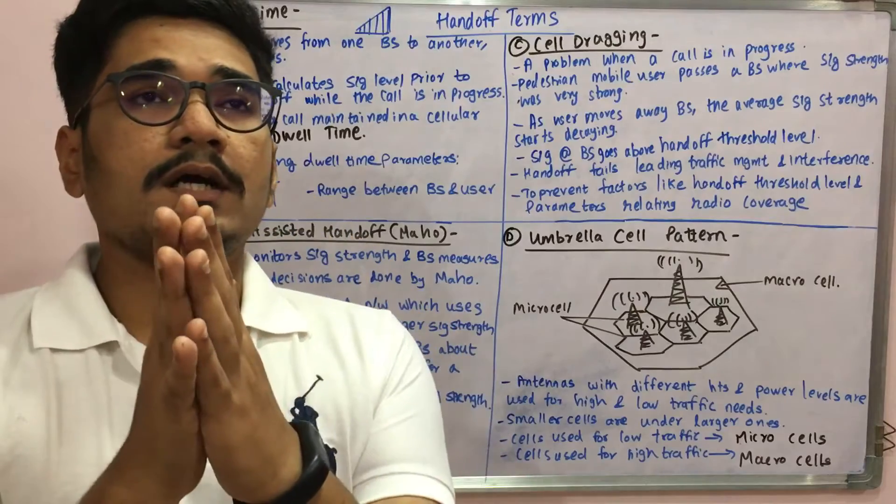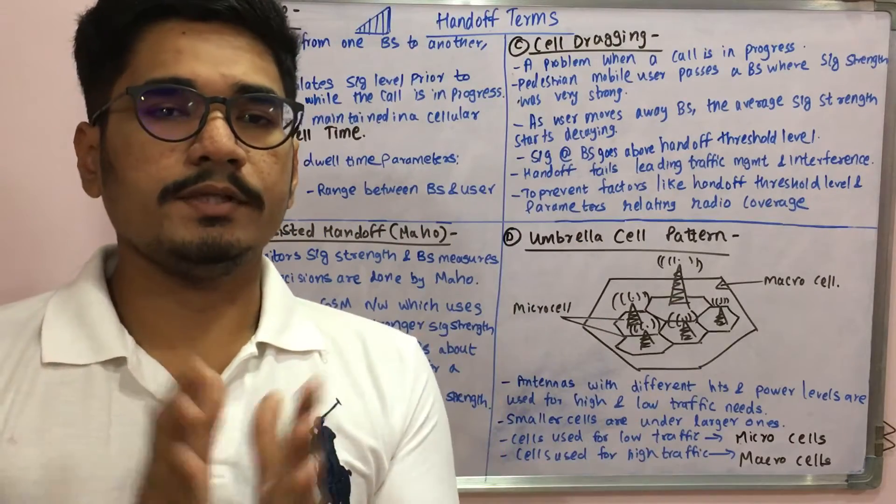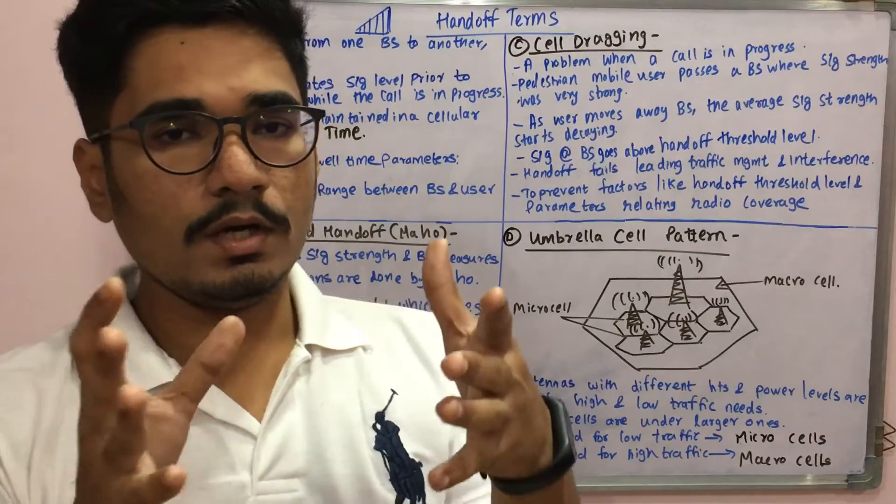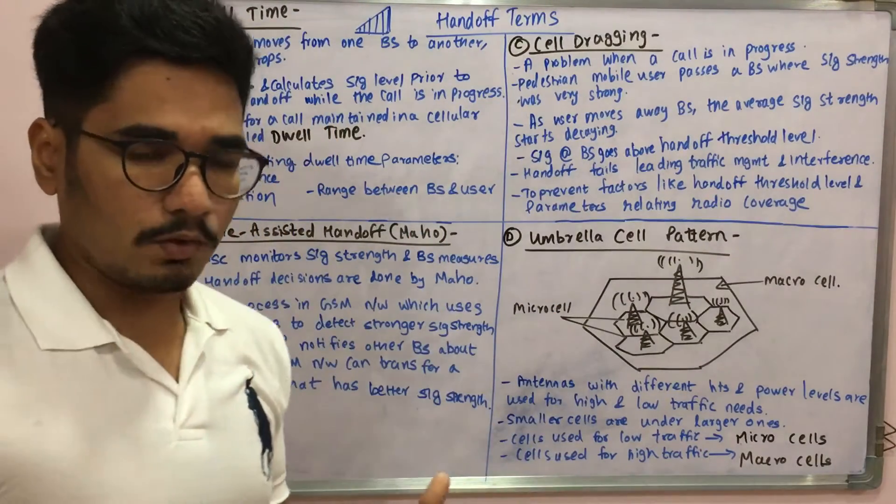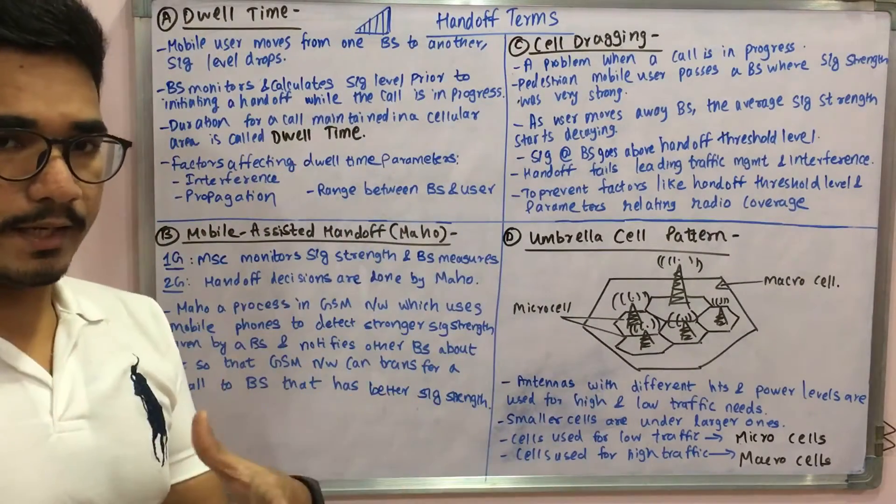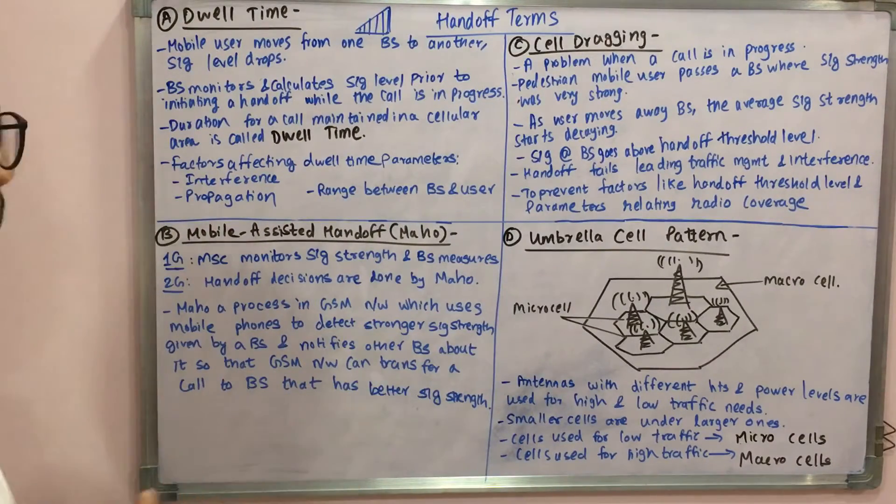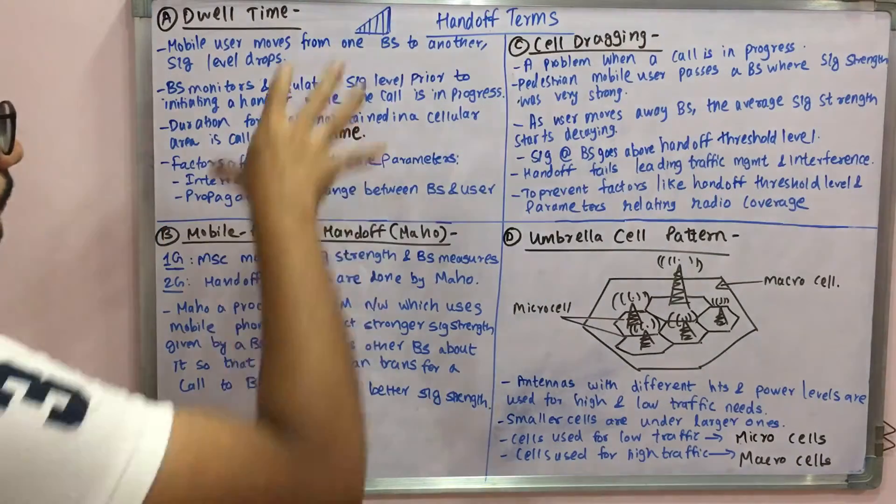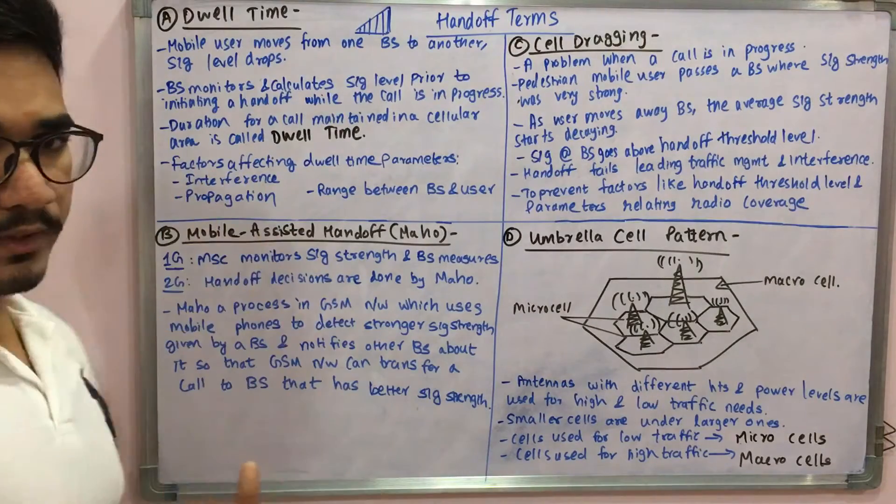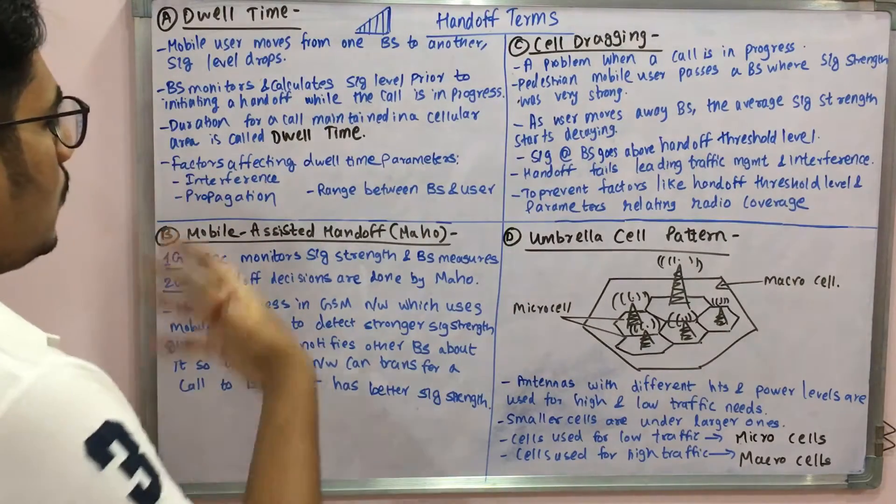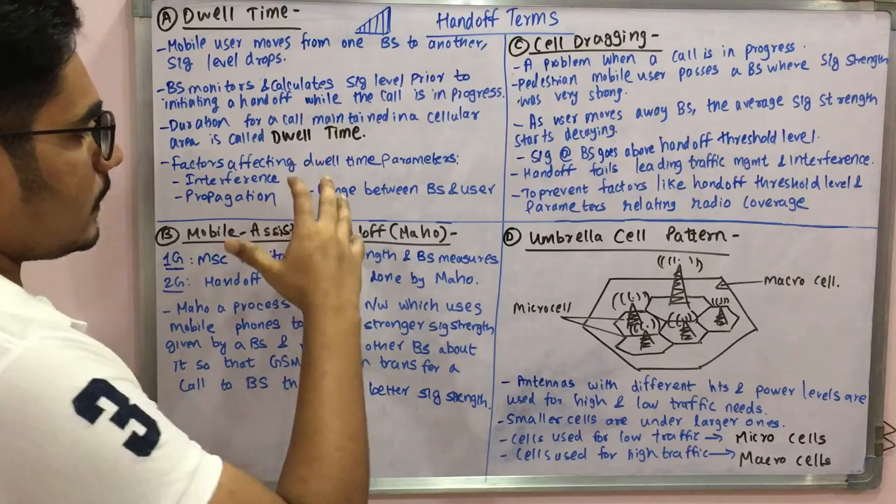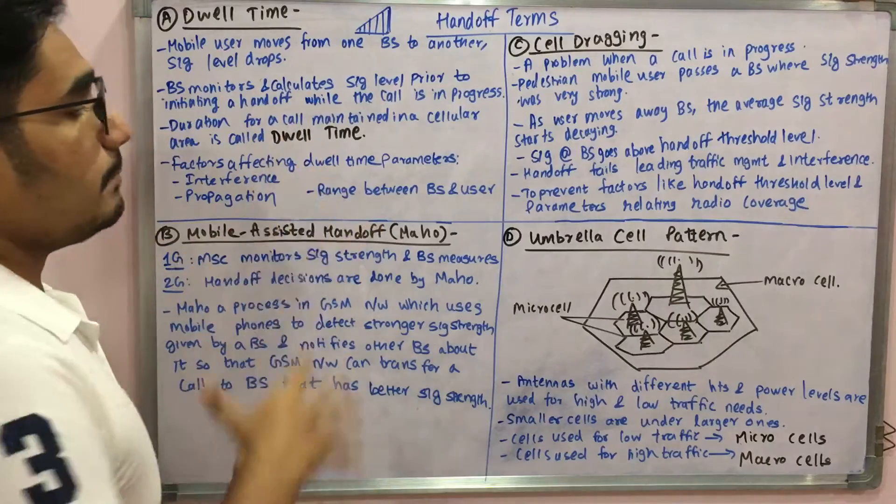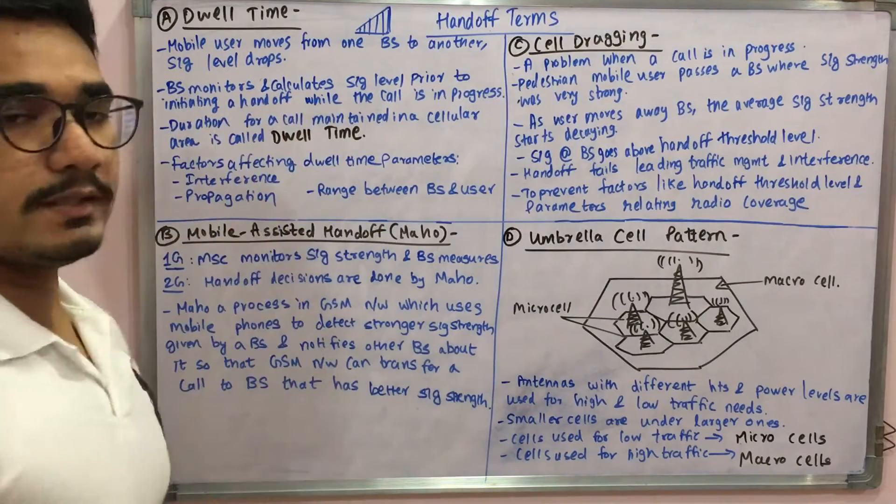We have seen the honeycomb structure with different cells, and within each cell we had different base stations. The duration for that particular call maintained in that cellular area or network is called dwell time. Some of the factors which are contributing to this dwell time or what causes signal degradation is the interference by nearby signals, propagation due to some other waves, and the major thing is the range between the base station and the user, which plays a very crucial role in this dwell time.